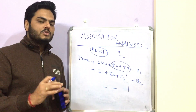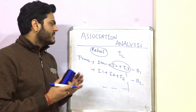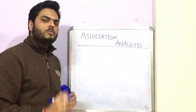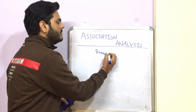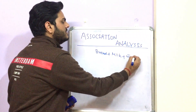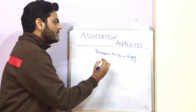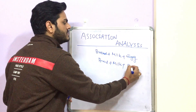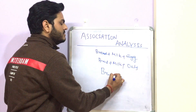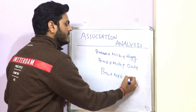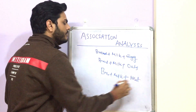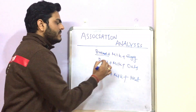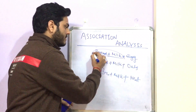In this analysis, the attributes of the product are not taken into consideration. To give a real-world example, let's say we fetch all the transactions of a nearby superstore. Transaction one: bread plus milk plus egg. Person two buys bread plus milk plus oats. A third person buys bread plus milk plus meat. From these three transactions we can see that whenever somebody buys bread, they also buy milk — this is one association.